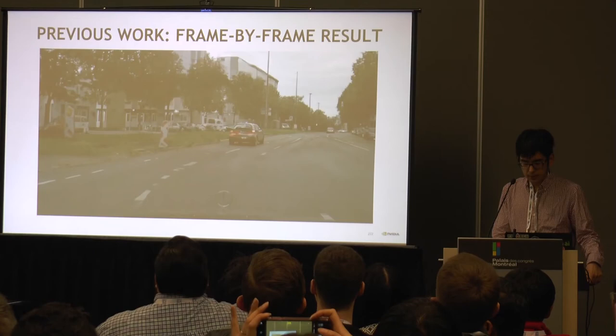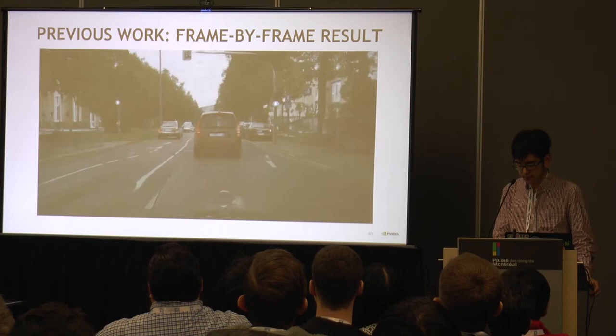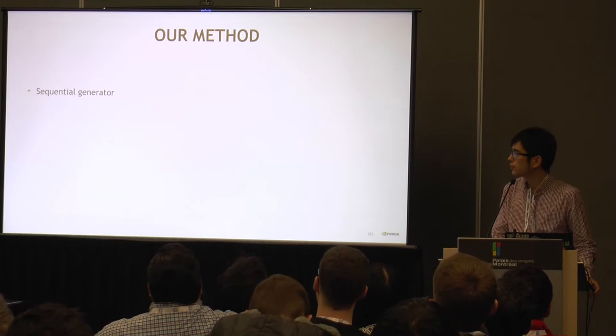Here's the example for if we just apply image translation frame-by-frame to a sequence. As you can see, there is a lot of flickering and it doesn't look convincing. To overcome this, our method adopts a sequential generator, temporal discriminators, and a progressive training schedule.